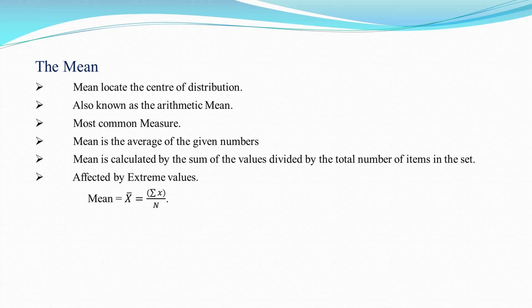Mean is calculated by the sum of the values divided by the total number of items in the set. It is affected by extreme values. The mean formula is: x̄ = Σx / n.